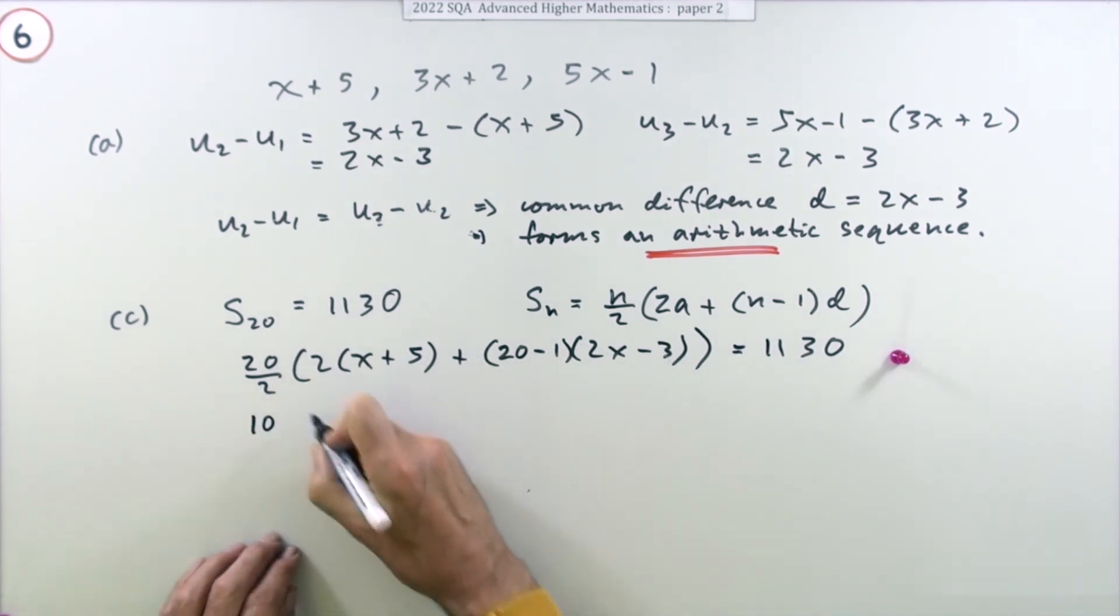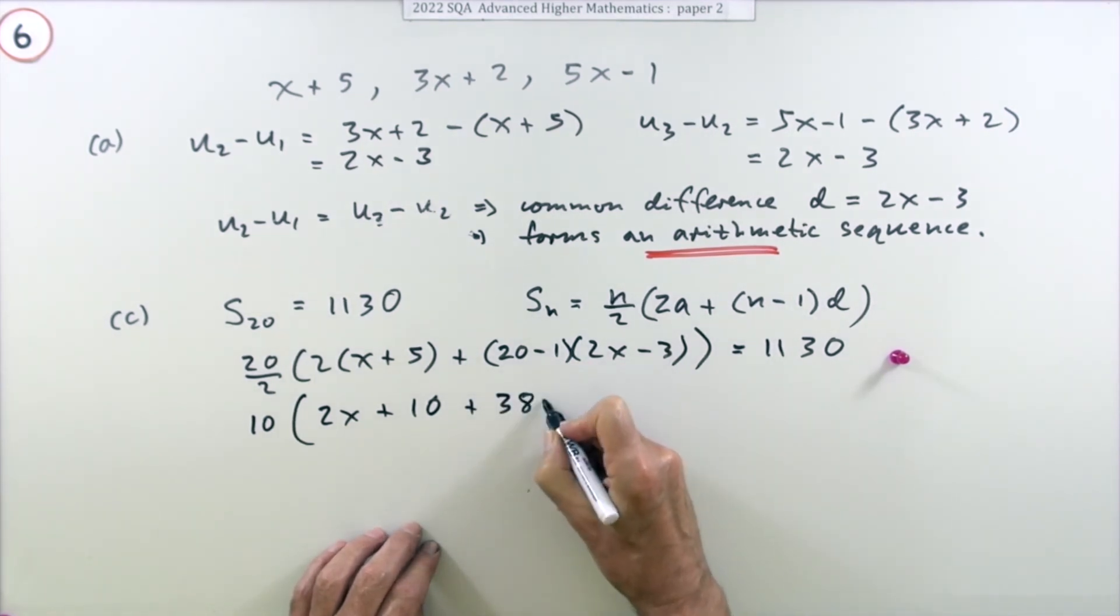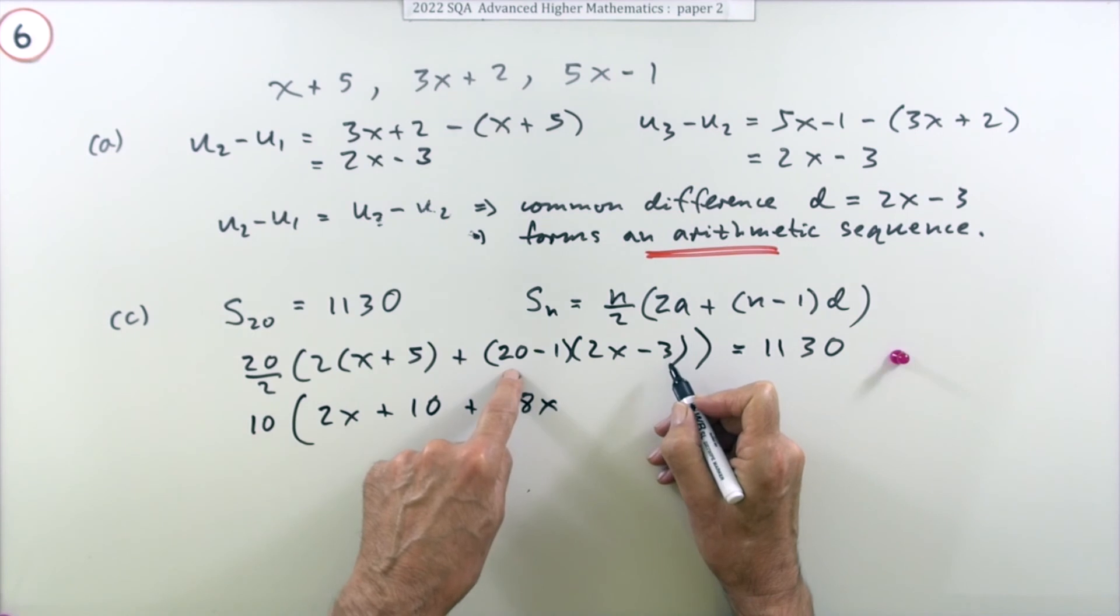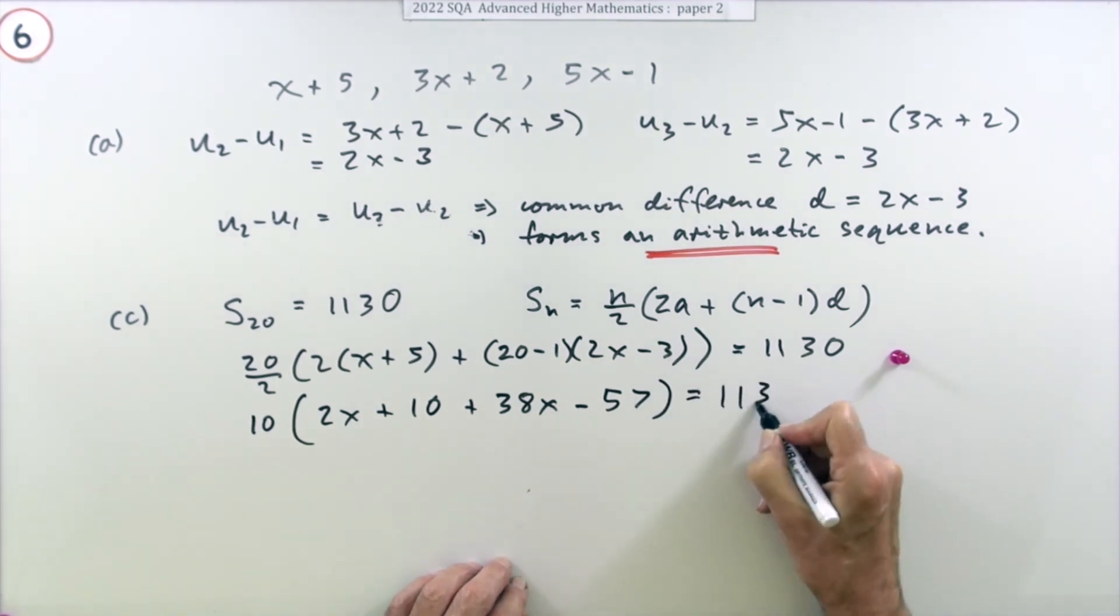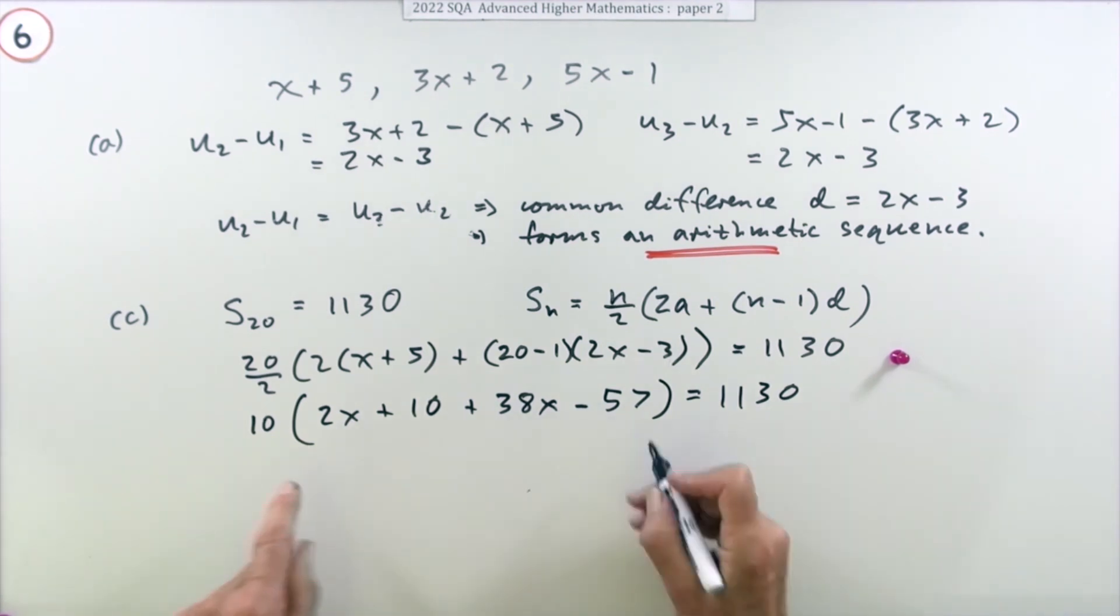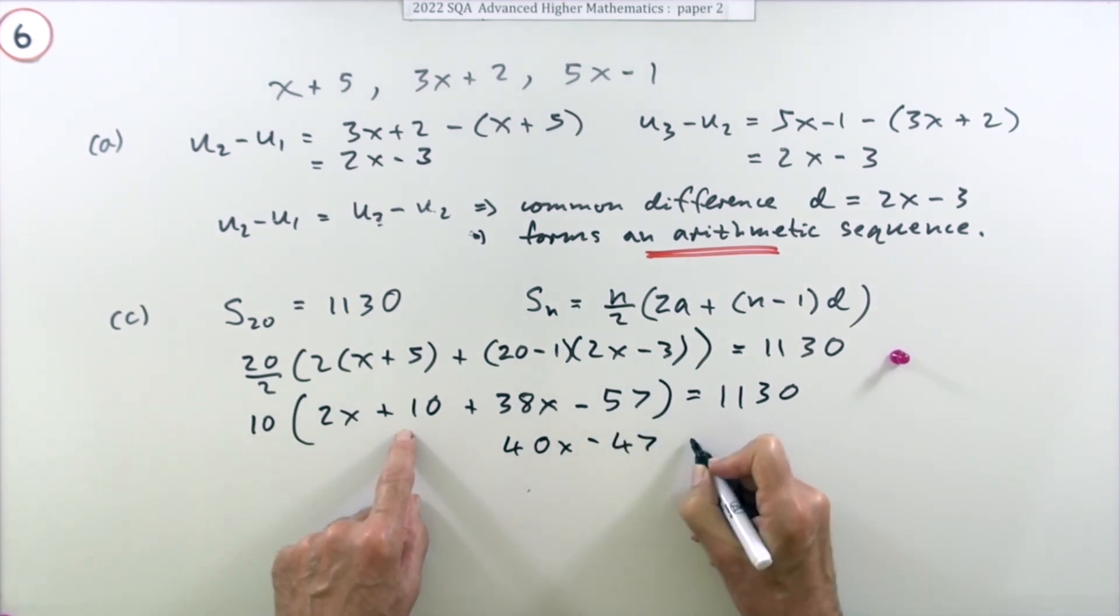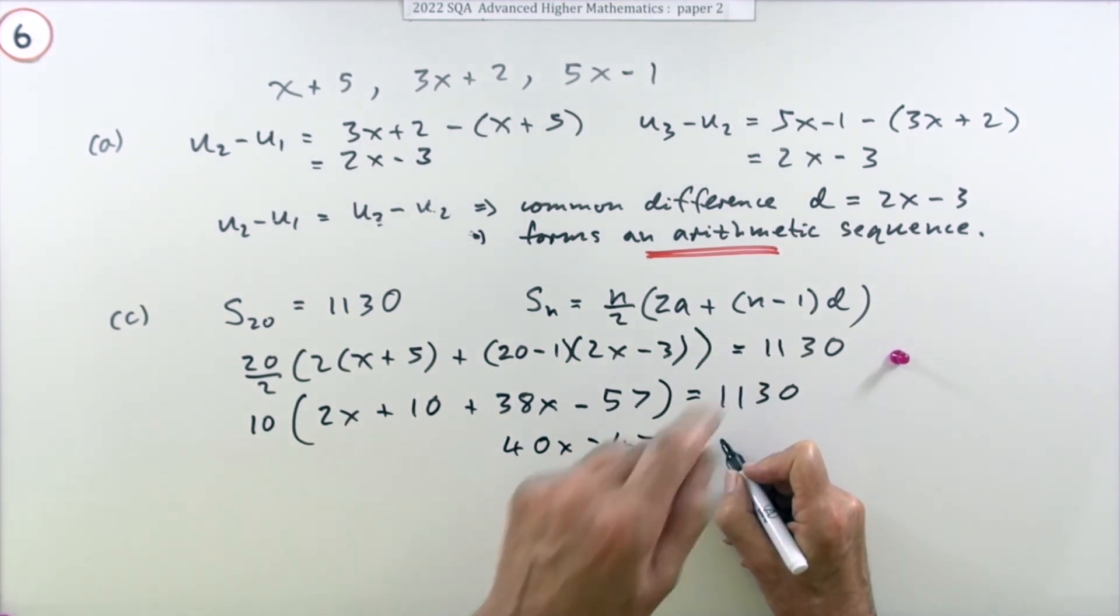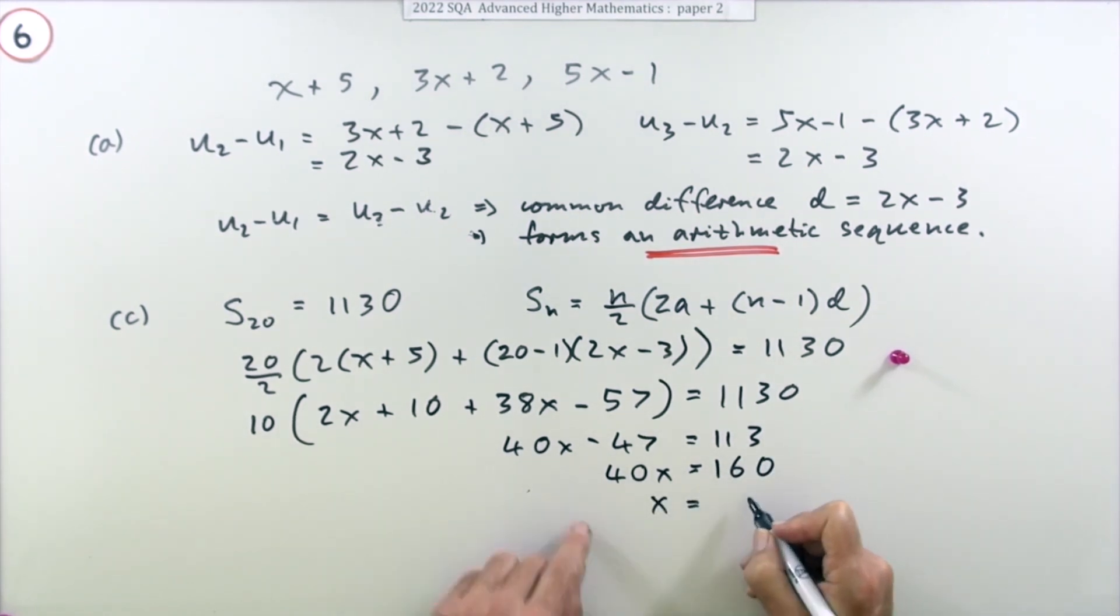Right, so there's tons of it here. We've got 10 times - what have we got altogether? We've got 2x, we've got 10, we've got 19 doubled to 38, and then we've got 3 times 19, well that'll be 60 take away 3, that's 57. That should equal 1130. Now tidy this. I'll take that 10 across. So tidy this up: you've got 40x and that'll be minus 47, and take that 10 across, and dividing will be 113. So the 40x will be - adding that on - 160, so the x will be, dividing it, 4. Now you get the last mark.